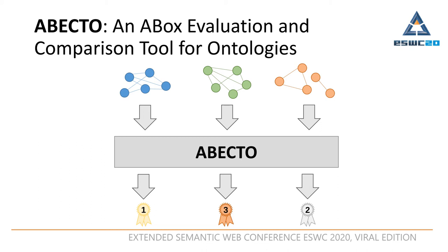ABACTO compares the facts in multiple ontologies and highlights deviations. Deviations between ontologies typically indicate missing or wrong facts in at least one ontology. In my demo, I will show how to use ABACTO for your project.